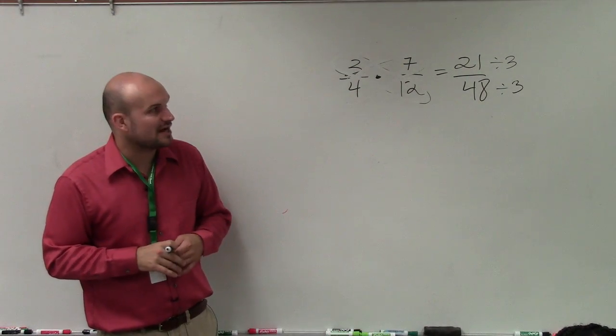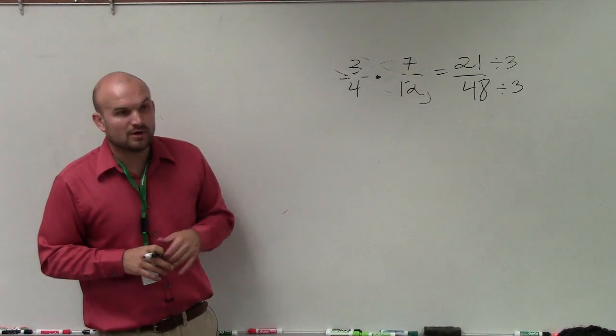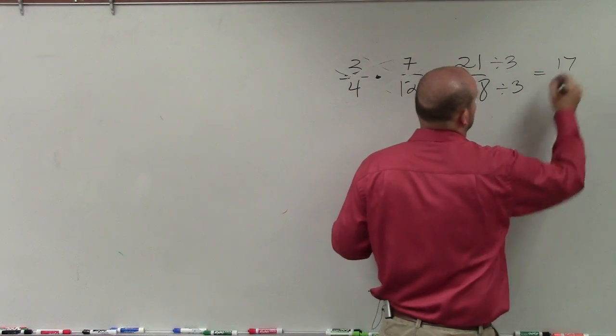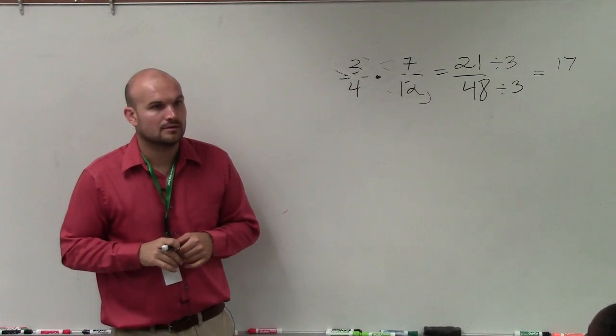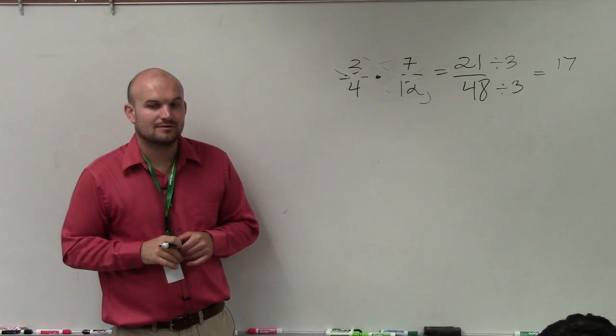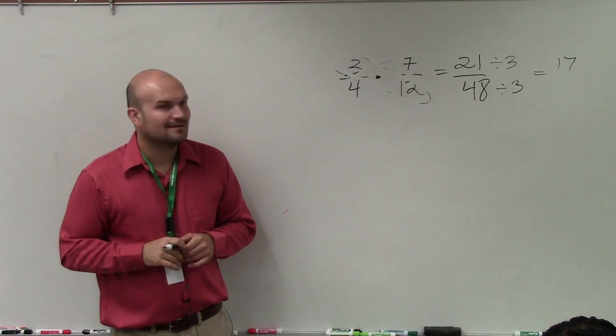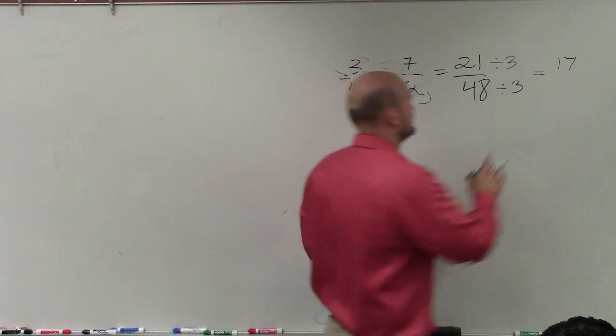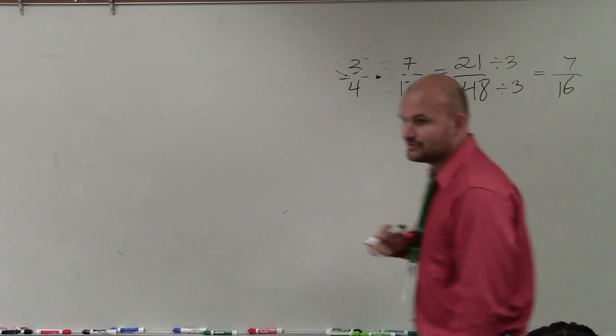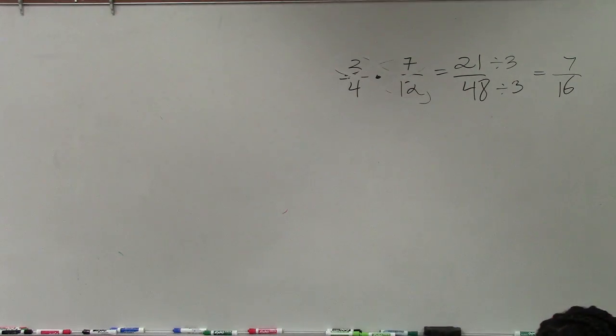So to reduce my fraction in this case, 21 divided by 3 we know is 7, 7 over 48 divided by 3 is 16. And that's your final answer. Beautiful.